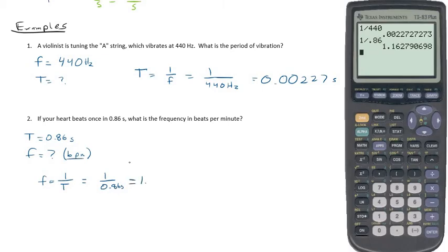So this is equal to 1.16, and our units are per second. So 1.16 per second, that means there's 1.16 heart beats per second. I should be converting it to 2 sig digs, so 1.2 per second.